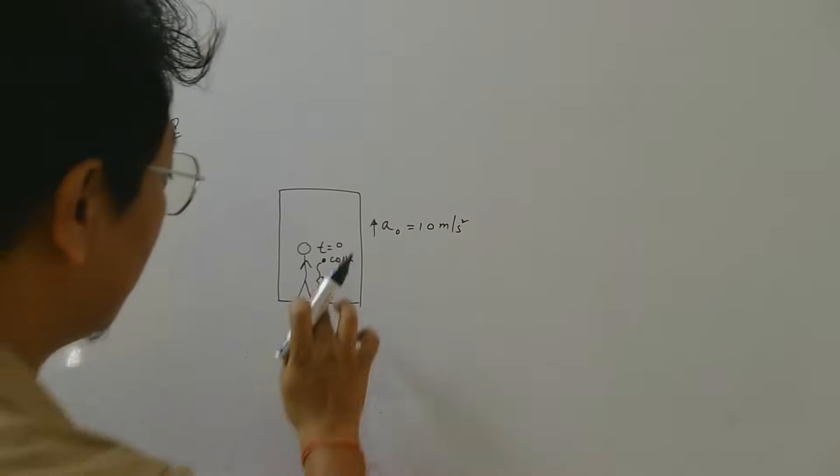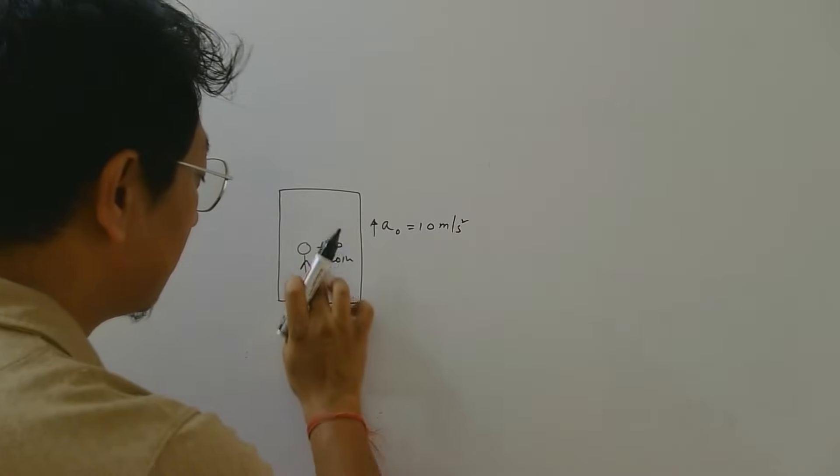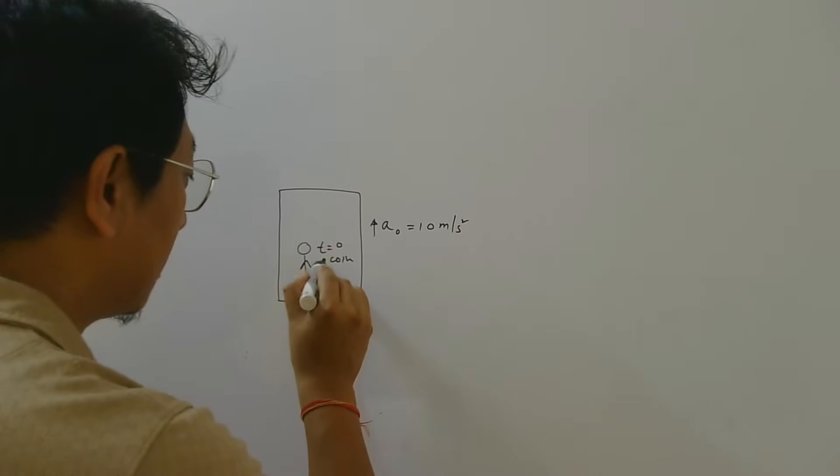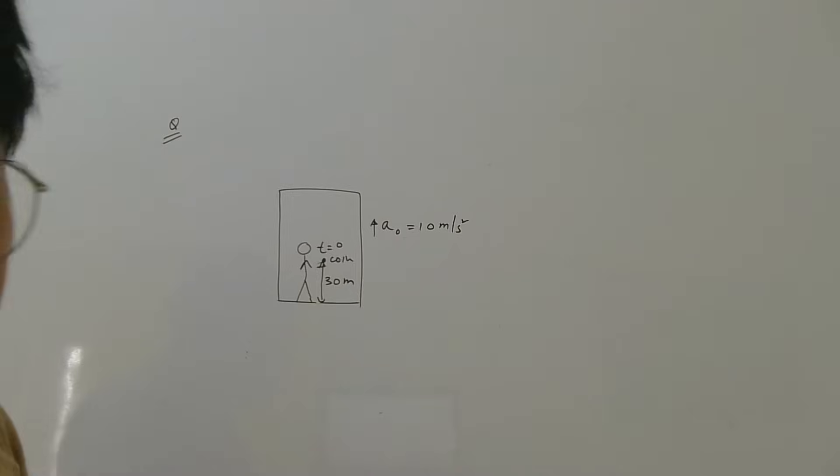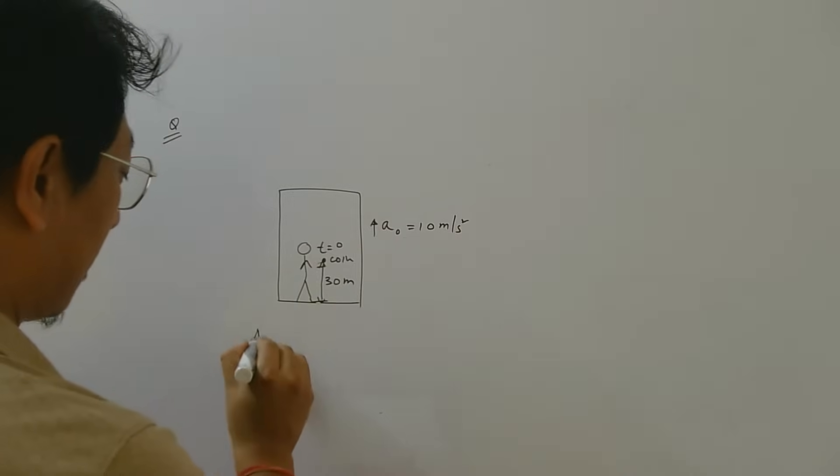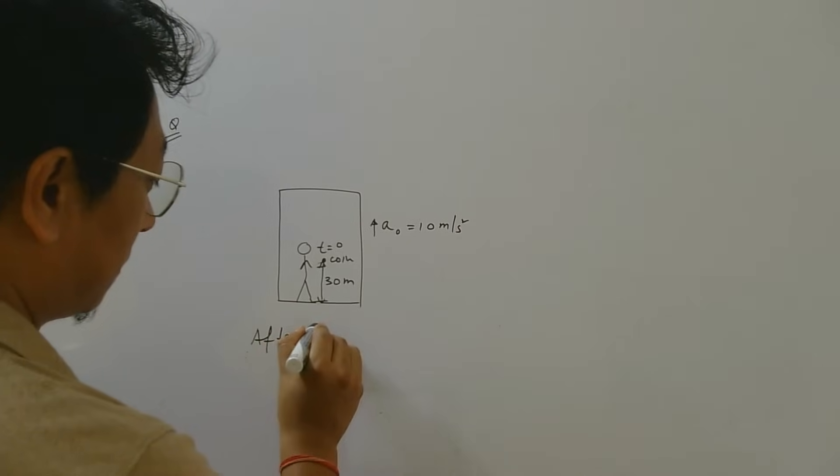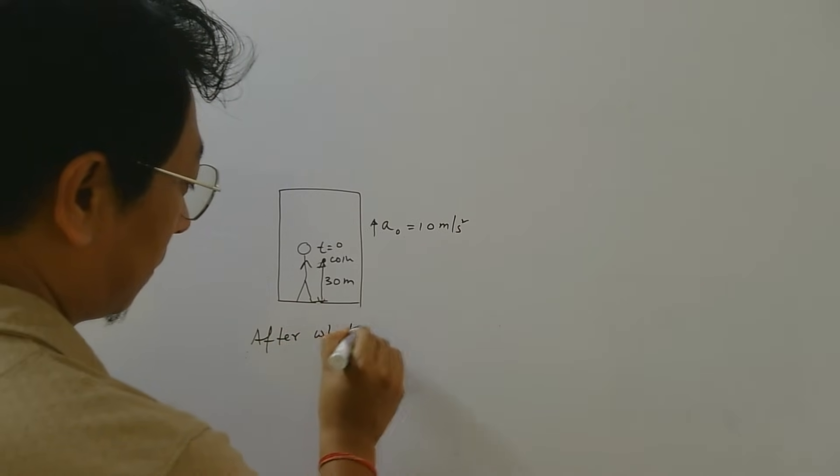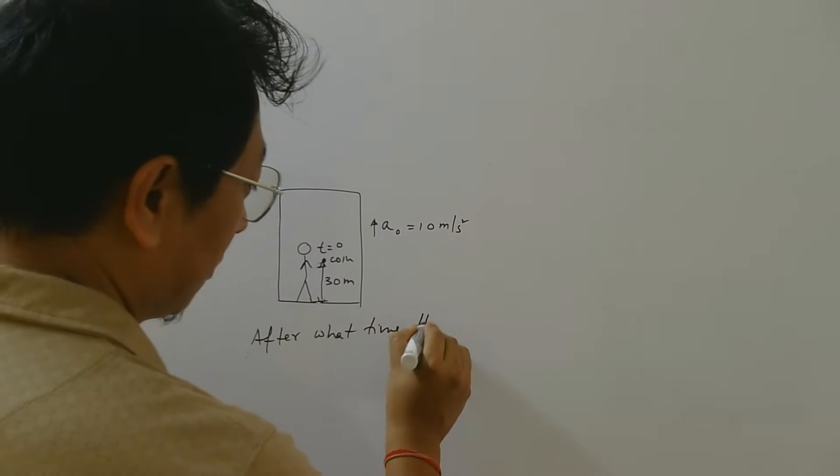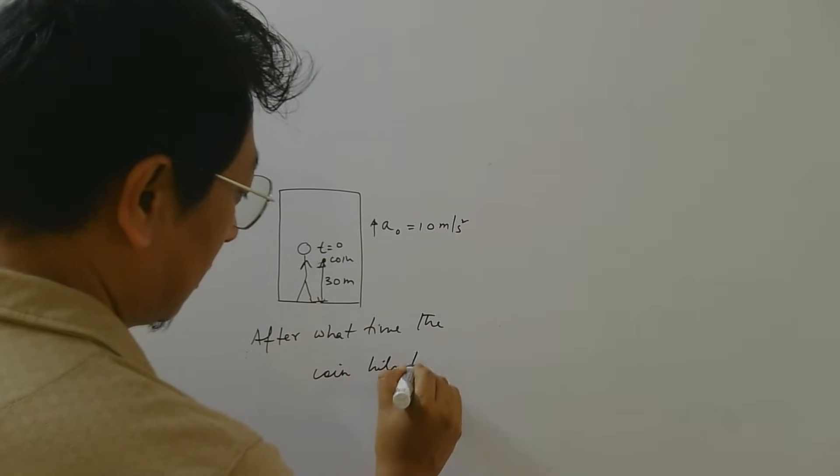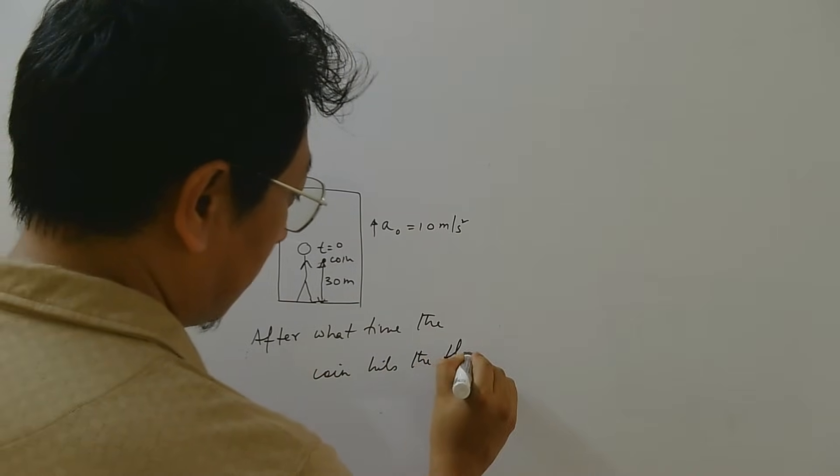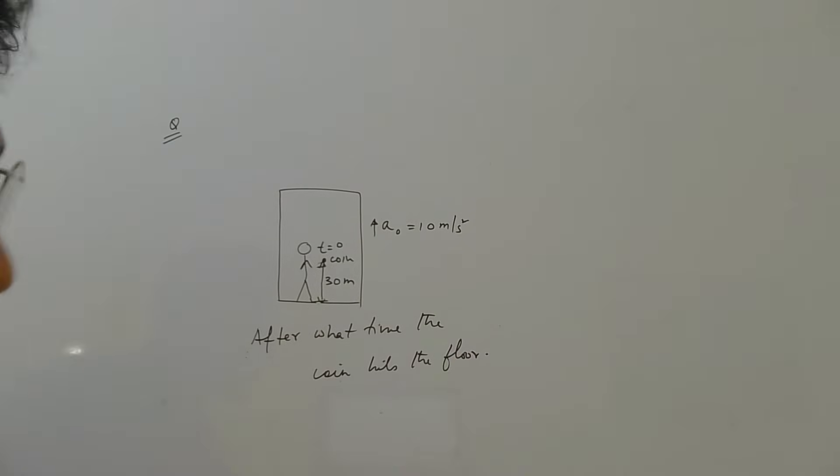So at a height of 30 meter, this height is 30 meter, he drops a coin at time 0. Question is after what time the coin hits the floor of the lift.